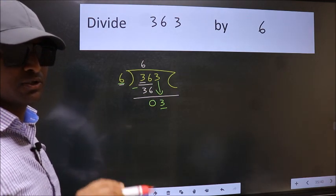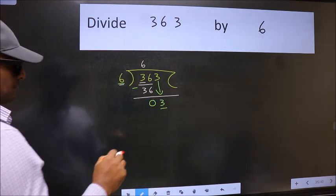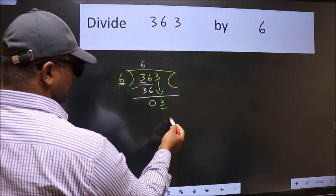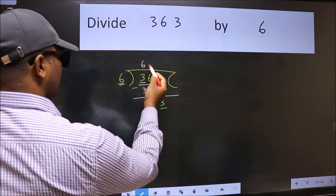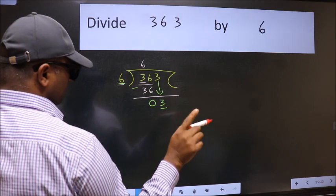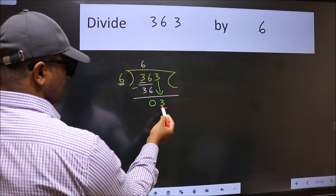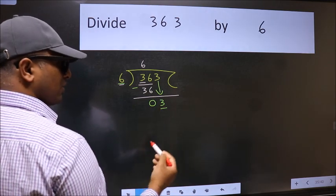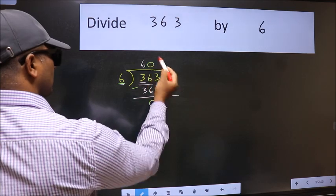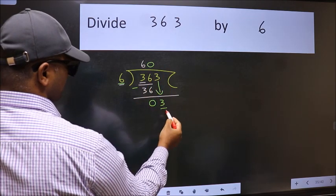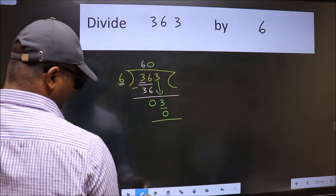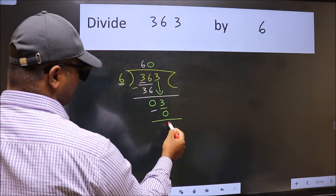Instead of that, what you should think of doing is which number should we take here? If I take 1, we will get 6. But 6 is larger than 3. So what we do is we take 0. So 6 into 0 equals 0. Now we subtract. We get 3.